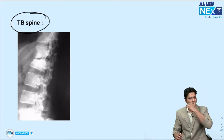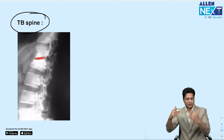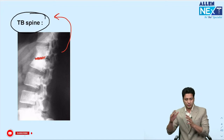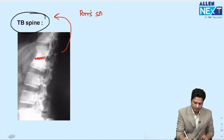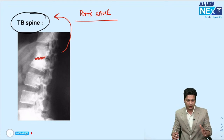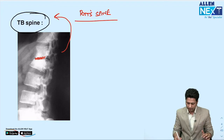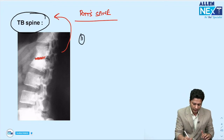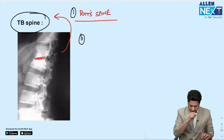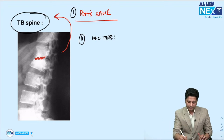Tuberculosis of the spine (Pott's spine): on lateral X-ray, reduction of joint space between two vertebrae with destruction of the vertebral bodies identifies Pott's spine. The most common type is paradiscal, involving the vertebral body and the adjacent intervertebral disc.